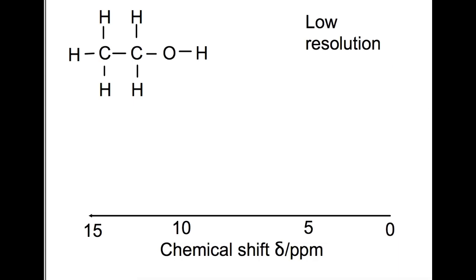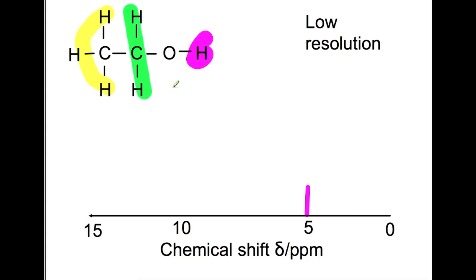Drawing out the low resolution spectra for ethanol — going back and highlighting our different proton groups. Looking at the OH peak: checking page 16 of the data book, this lies somewhere between 1 and 5 on the NMR spectrum, so we put it around 5, with a height for one hydrogen. For the CH2 attached to oxygen, that's the fourth row in the table, coming between 3.5 and 3.9, and double the height for two hydrogens. Finally our CH3 attached to carbon comes between 0.9 and 1.5, with height three.